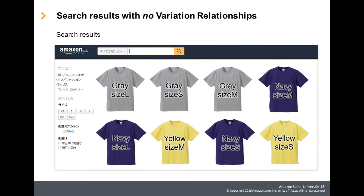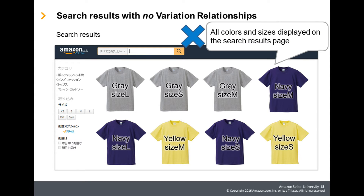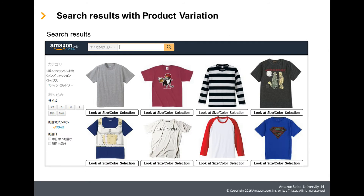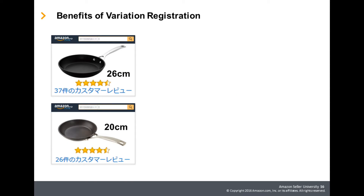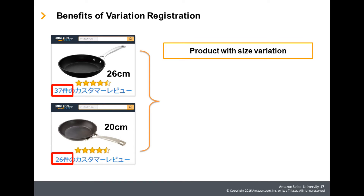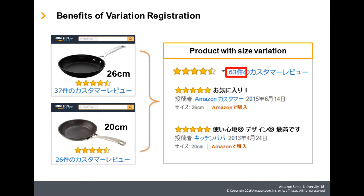When variation relationships are not properly set up, all color and size options will appear in search results rather than letting the customer see them all in a single detail page. When variation relationships are created correctly, all colors and sizes will be on a single detail page, allowing customers to easily see all options together. Also, by having all variations on a single detail page, customer reviews for all variations can be shared among each other.